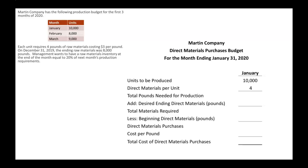Now, total pounds needed for production: if we are going to produce 10,000 units and each unit needs four pounds of materials, we multiply those two and we see that we need 40,000 pounds for production this month.